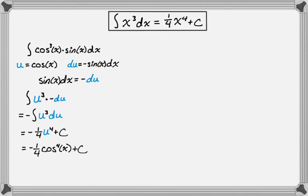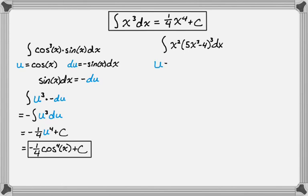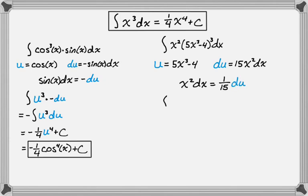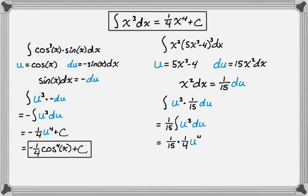Let's look at another one. Once you get the hang of it, integrals all start looking the same. Say we want to integrate x² times (5x³ − 4)³ dx. I'll let u equal 5x³ − 4, which means du is 15x² dx. In the problem I have x² and dx but not a 15, so solving gives x² dx equals 1/15 du. Substituting, the integral becomes 1/15 times the integral of u³ du, which by the power rule is 1/15 times 1/4 u⁴ plus c. Substituting back gives 1/60 (5x³ − 4)⁴ plus c. You can see these two problems are basically the same once we do u-substitution.